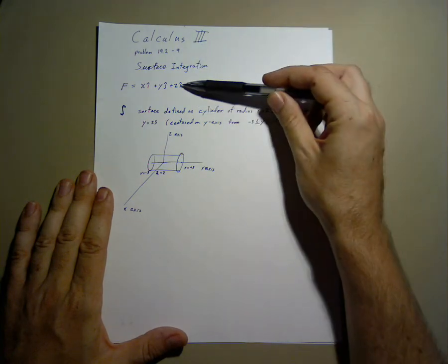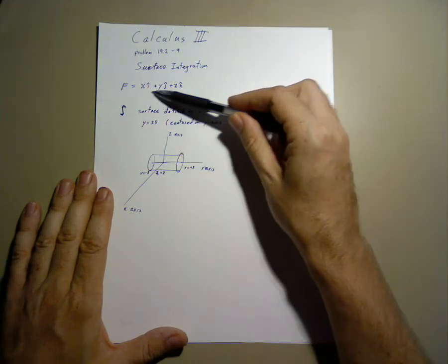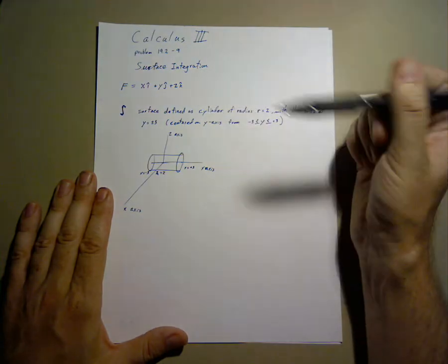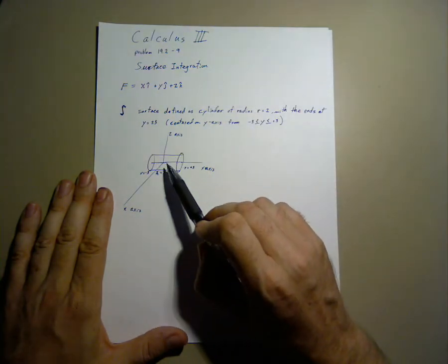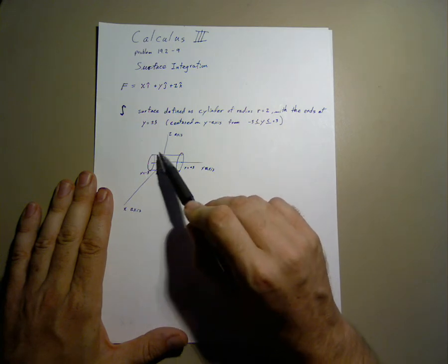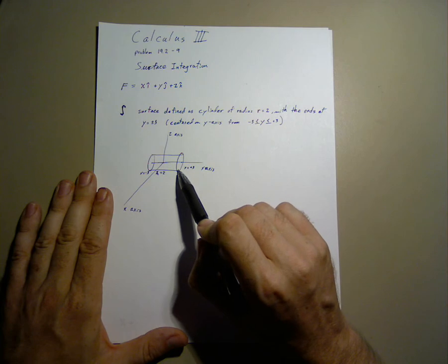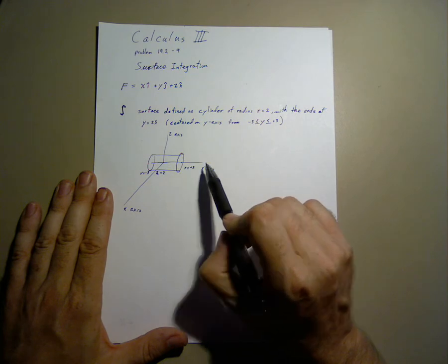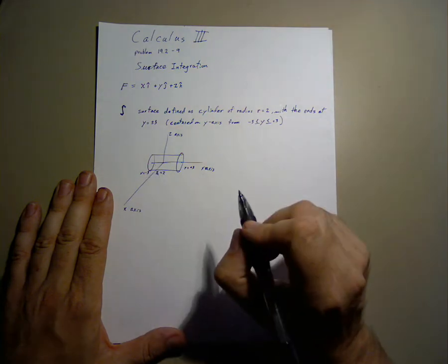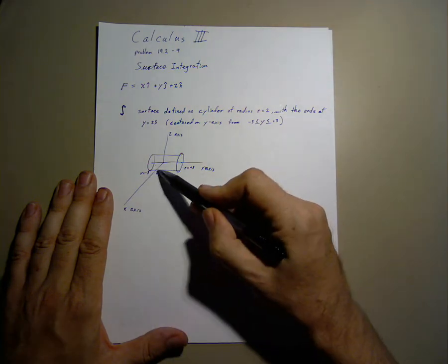Our function will be x i-hat, y j-hat, z k-hat. And we'll be integrating over the region of this cylinder centered on the y-axis from y equals plus 3 to y equals negative 3, with radius of 2.